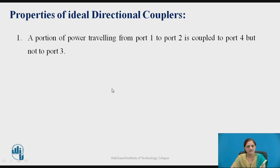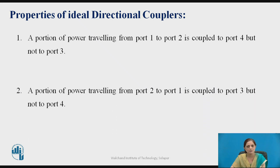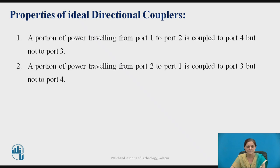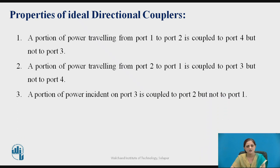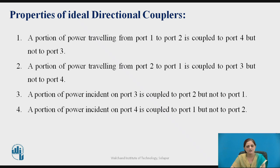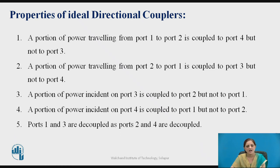The main properties of an ideal directional coupler are as follows. A portion of power travelling from port 1 to port 2 is coupled to port 4 but not to port 3. A portion of power travelling from port 2 to port 1 is coupled to port 3 but not to port 4. A portion of power incident on port 3 is coupled to port 2 but not to port 1. A portion of power incident on port 4 is coupled to port 1 but not to port 2. Port 1 and port 3 are decoupled, as are port 2 and port 4.